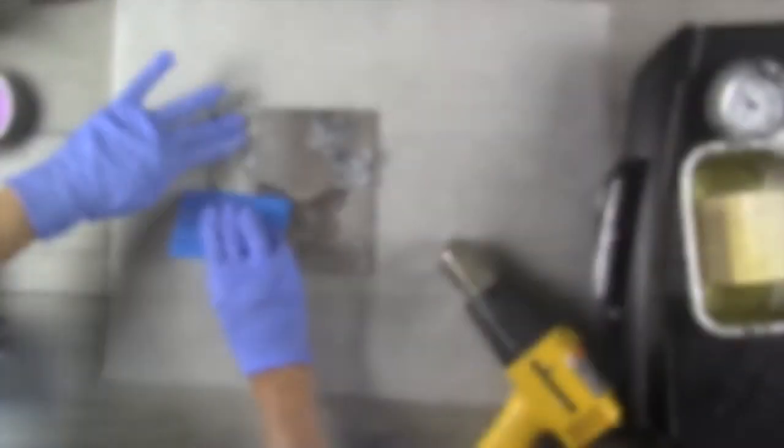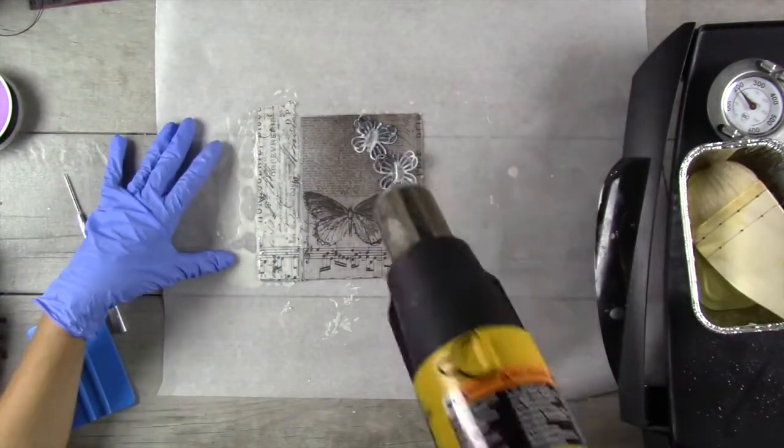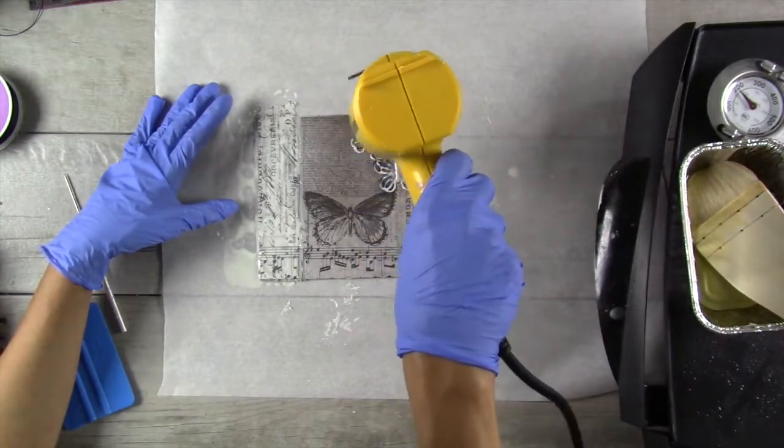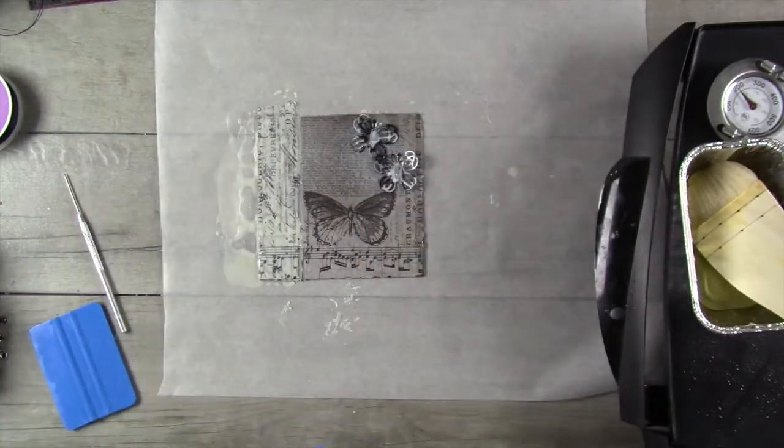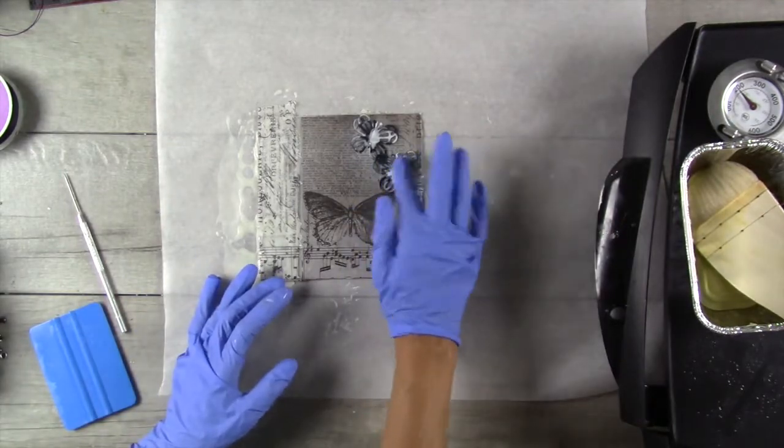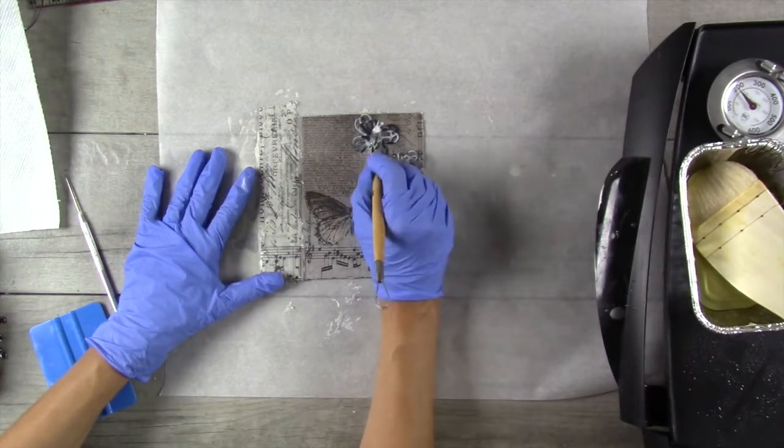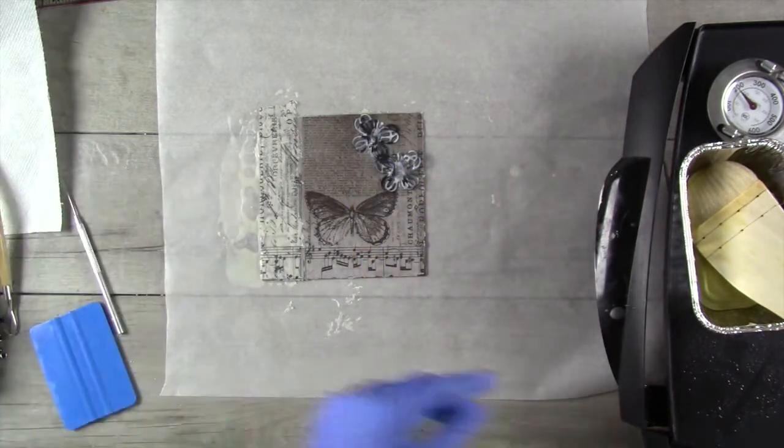I use clear encaustic to adhere the paper to the surface and also to help adhere the butterflies onto the surface. Then I do a combination of scraping away and adding more wax and fusing to get exactly the look that I was going for on those little butterflies.